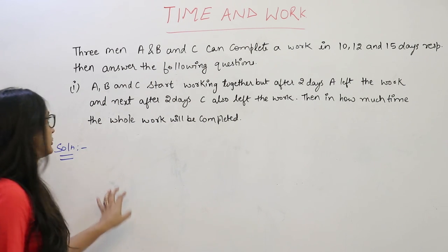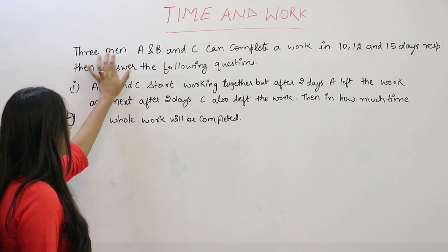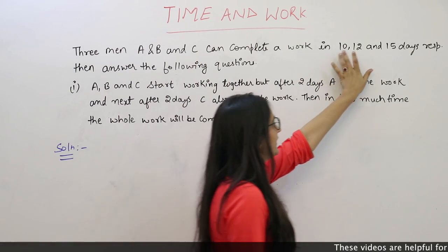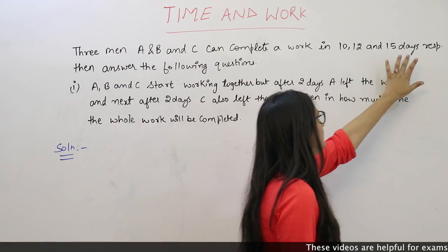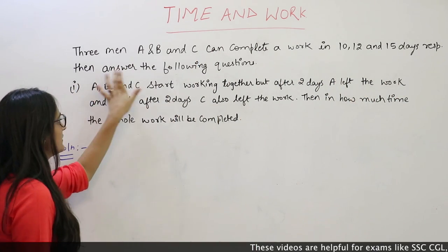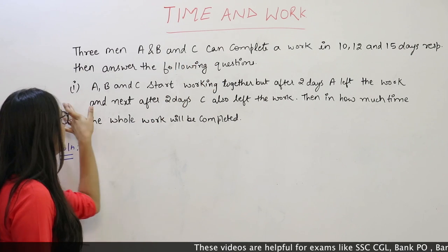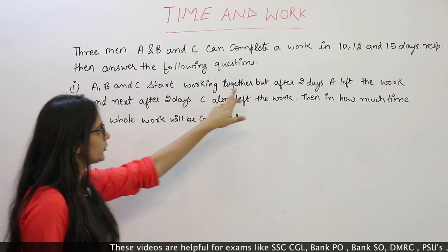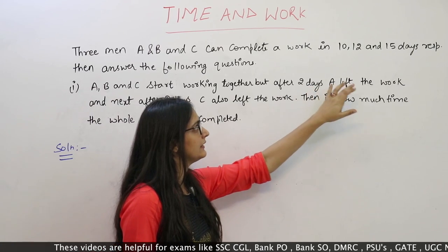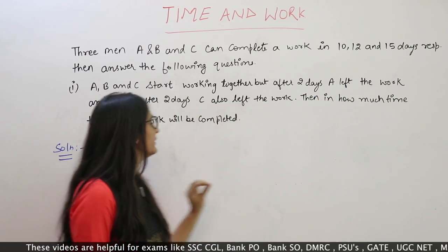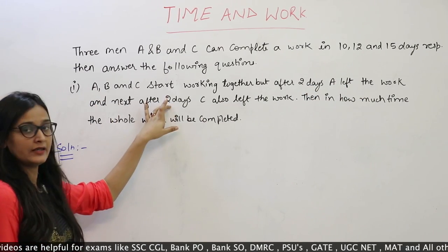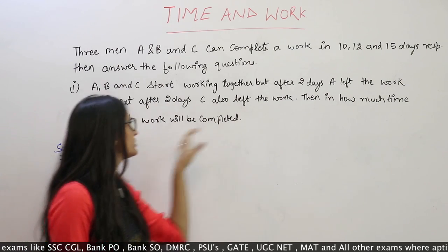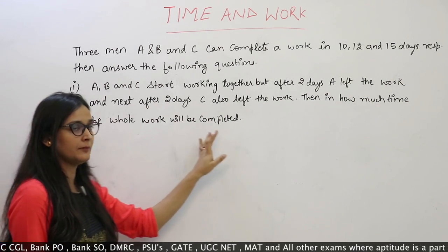Let us move towards the next question. 3 men A, B and C can complete a work in 10, 12 and 15 days respectively. A, B and C start working together. But after 2 days A left the work, and next after 2 days C also left the work. Then in how much time will the whole work be completed?